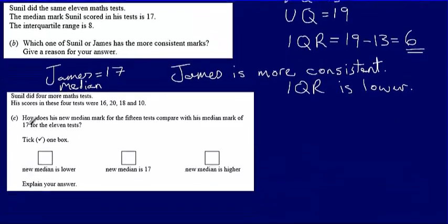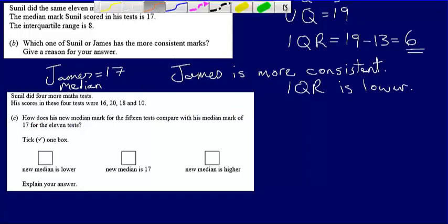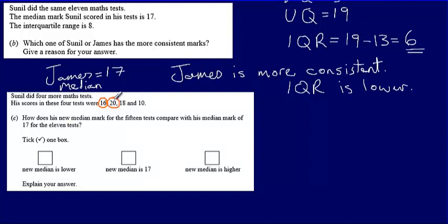On to part C. We're told that Sunil did four more maths tests, and his scores in these four tests were 16, 20, 18, and 10. We're asked how his new median mark for the 15 tests compares with his median of 17 for the 11 tests. Looking at these numbers, 20 and 18 will sit above that median of 17, and 16 and 10 will sit below it, which means the new median is the same as it was before.